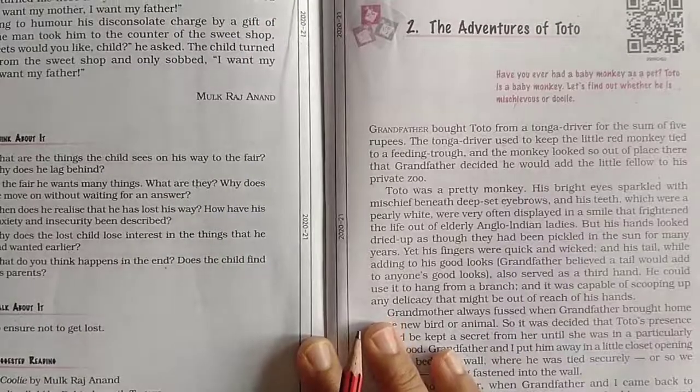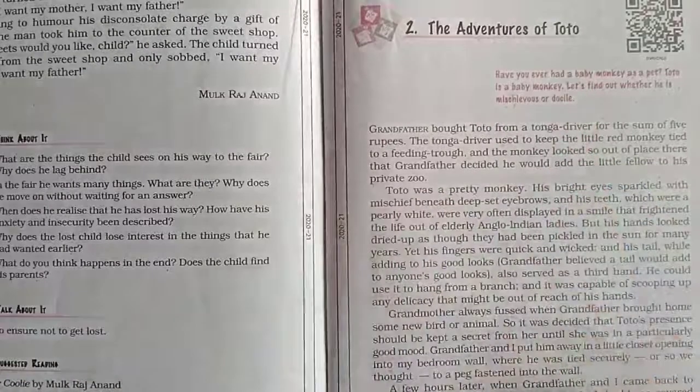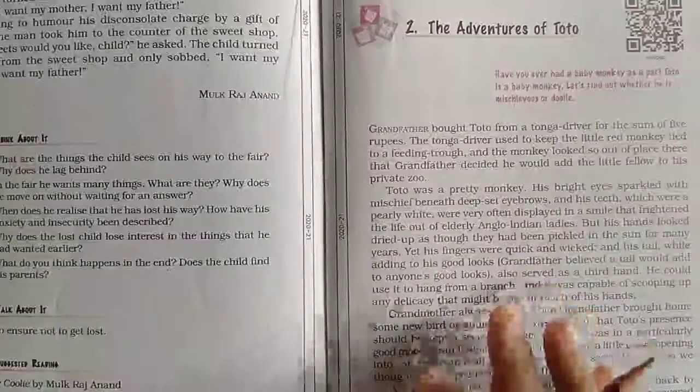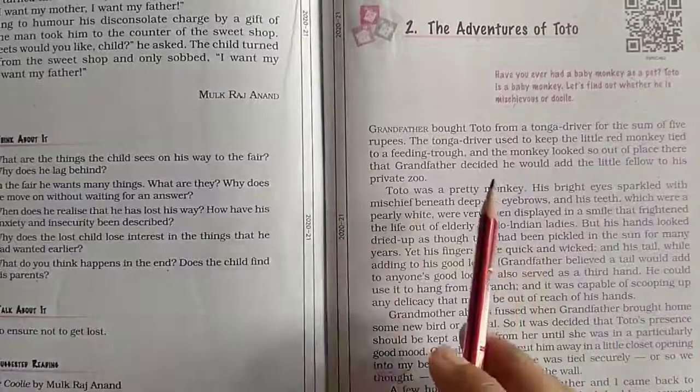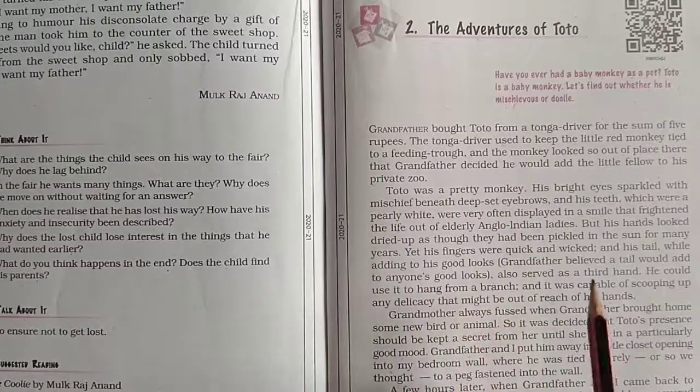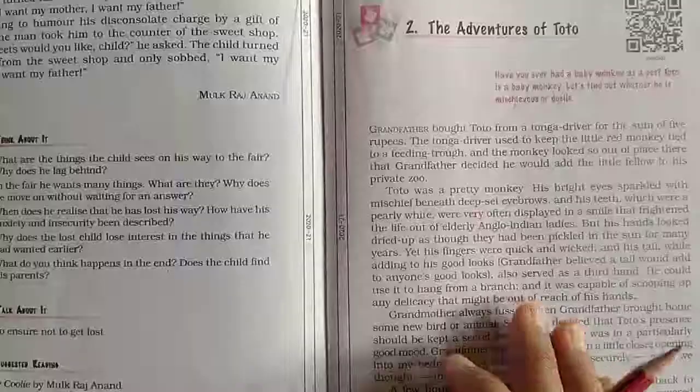Hello students, good morning. We started the adventure of Toto in my previous video where I explained that Toto is a baby monkey and how grandfather bought Toto and kept it secret from the grandmother. Now Toto freed himself, and grandfather thought him very clever.